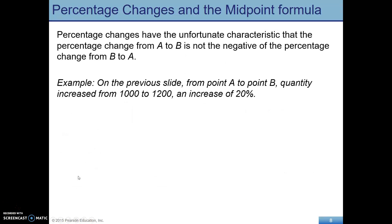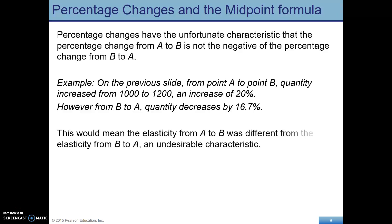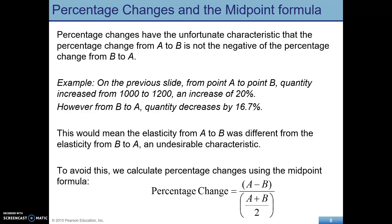The problem with just using the straight-up percentage change is that the number you would get calculating elasticity would be different if you were moving from A to B or B to A on that previous slide. So to get around this problem, what we do is use the midpoint formula. When we calculate the percentage changes, it's still going to be new minus old, but instead of just being over old on the bottom, we use the average.